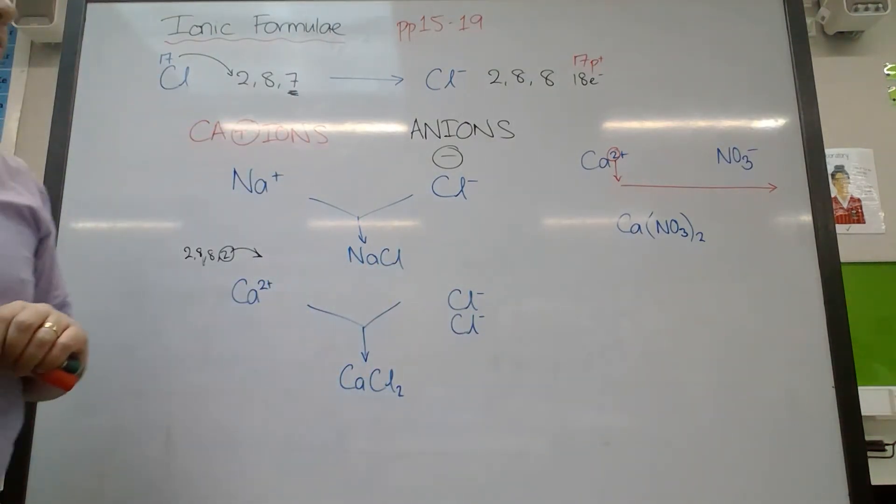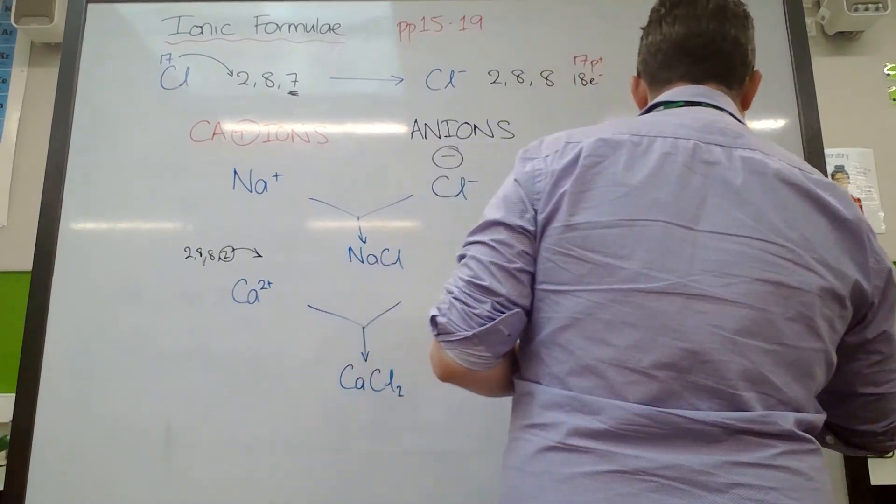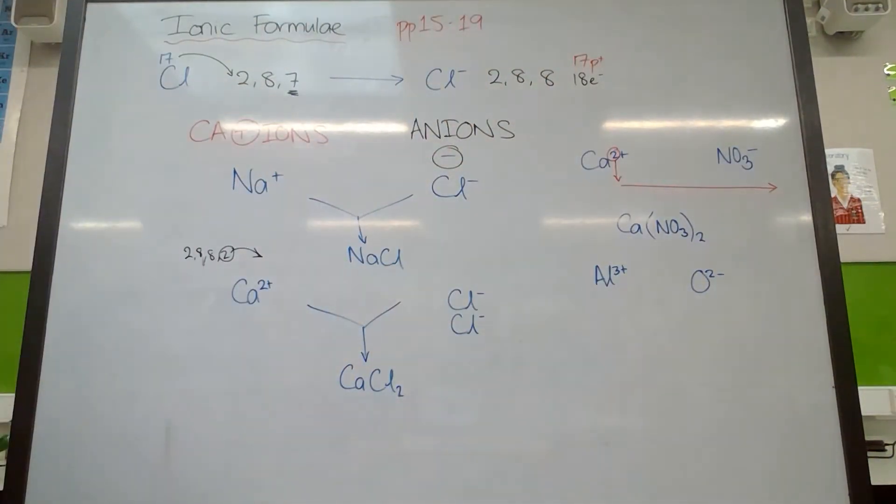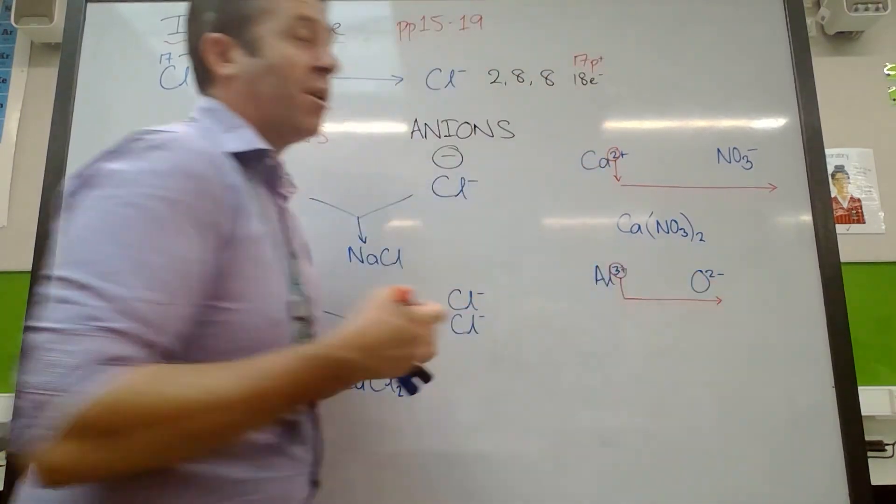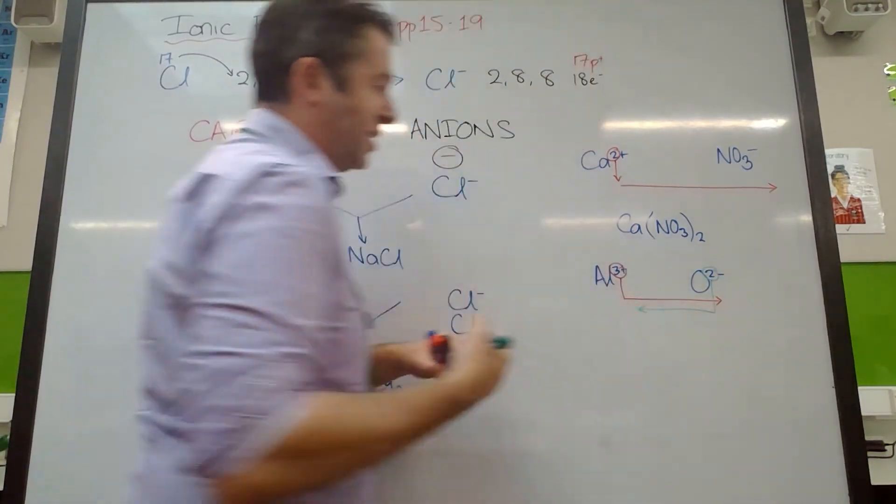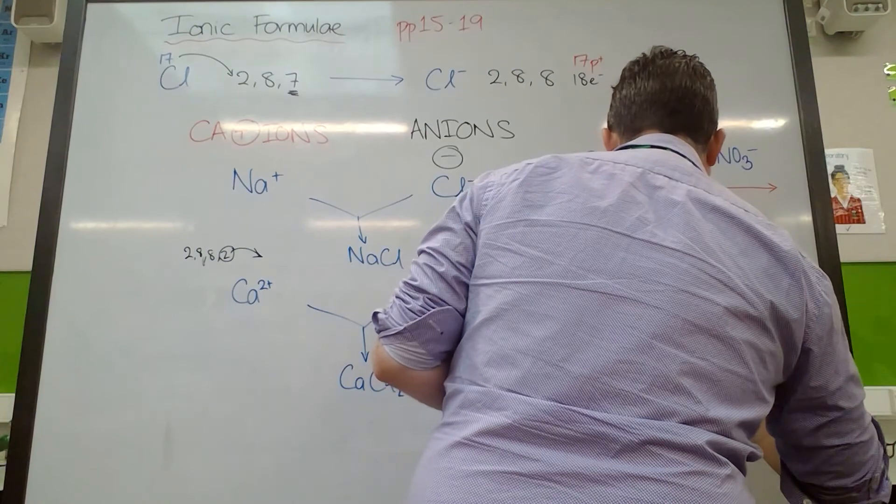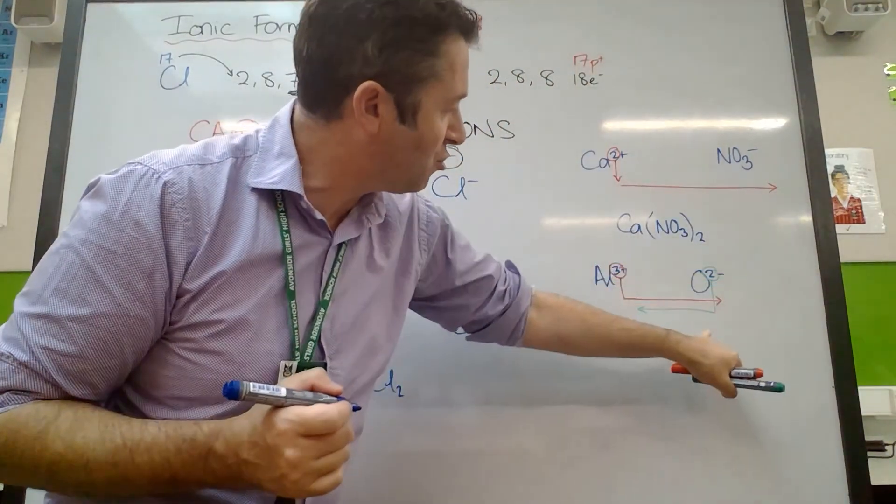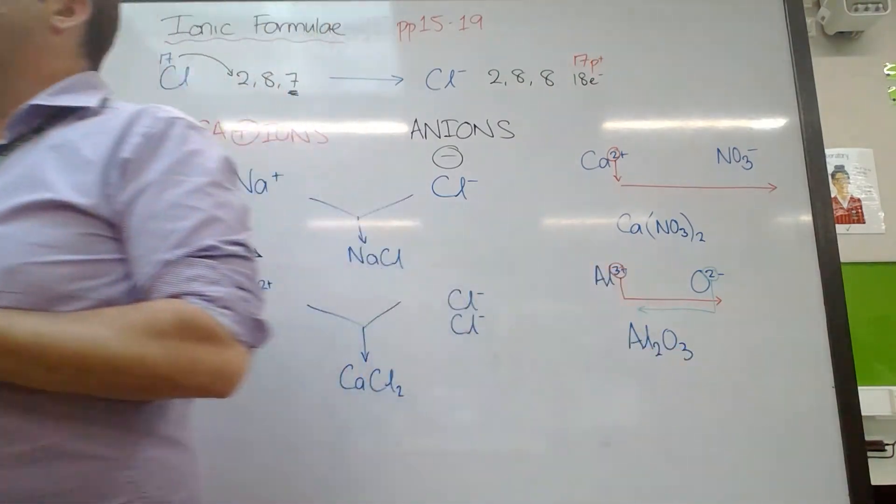The reason this becomes really useful is when we get things like, let's say, aluminium oxide. Al is three plus and oxide is two minus. Just write them out, so the balance out can be quite tricky and time consuming. But if I take, because the three and the two are different numbers, I'll take the three and I'll drop it and swap it. But I'm also going to take the two and drop it and swap it. And I end up with this formula. The two has been dropped and swapped to the aluminium, saying there's two aluminium ions. And the three has been dropped and swapped, saying there's three oxide ions.